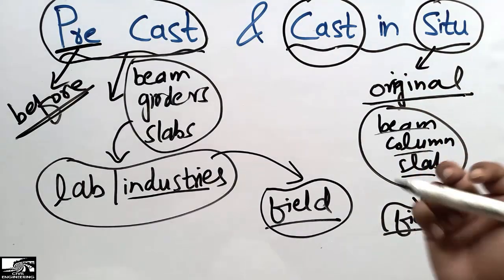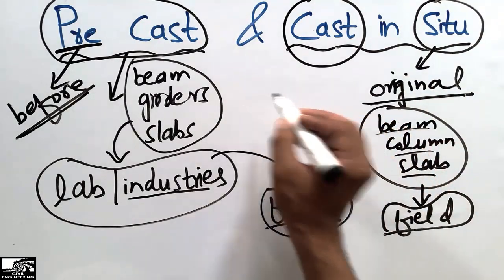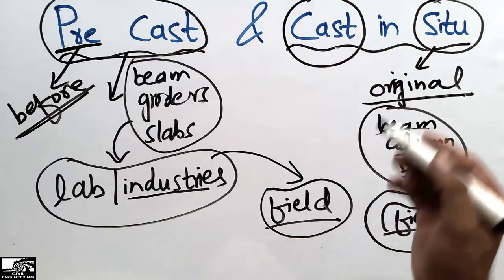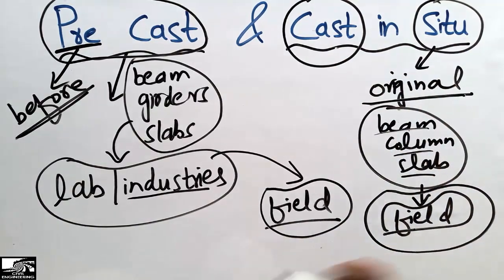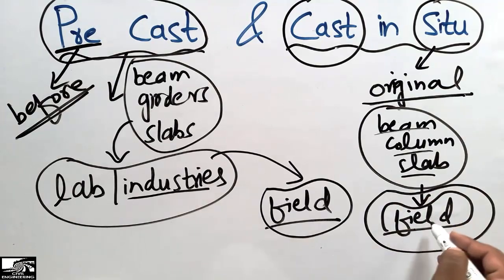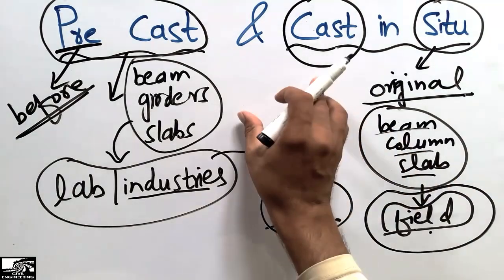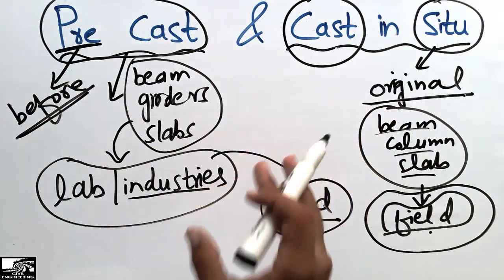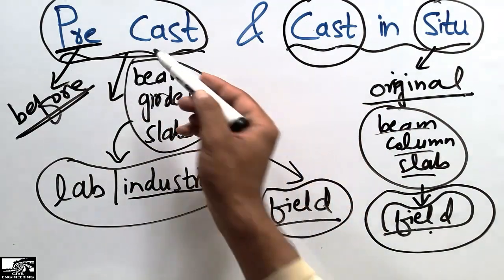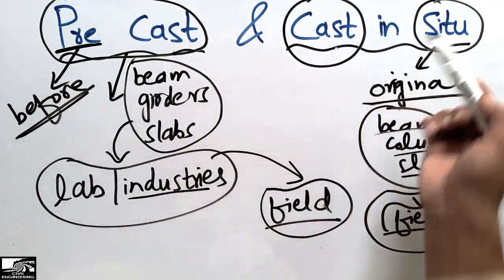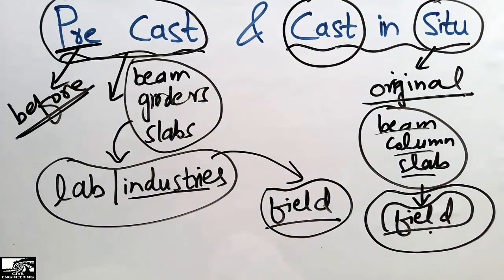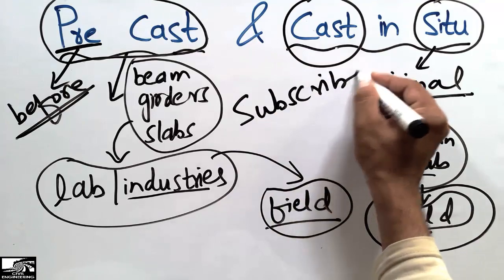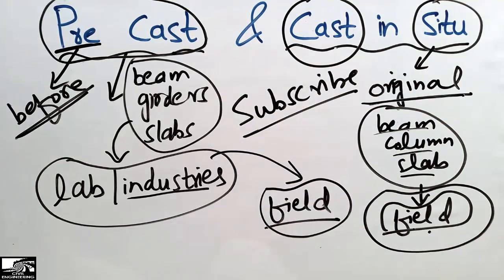In cast-in-situ construction, the concrete and steel are prepared in the field itself — there is no need to bring pre-manufactured members to the site. This was the main difference between the two terms. Hope you guys understand. Please subscribe to our channel for daily civil engineering videos. Thank you for watching.